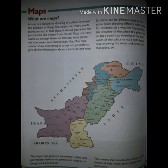A weather map will only tell you about weather. A road map will tell you where the roads are and where to go. A hydrological map will tell you about rivers and streams. Each map type shows you specific information about that place.